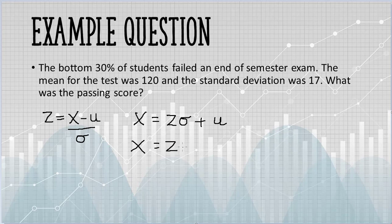We don't know the z-score just yet, but we do know that sigma is 17, that's our standard deviation, and mu, the mean, is 120.